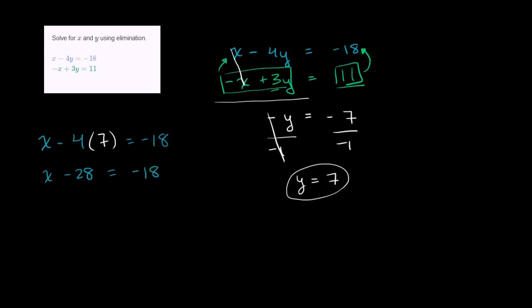Now to solve for x, and we've done this many times before, we just add 28 to both sides. So let's add 28 to the left, 28 to the right. And we are left with x is equal to negative 18 plus 28. It's the same thing as 28 minus 18, which is 10. So we get x is equal to 10 and y is equal to 7.